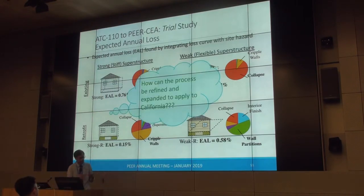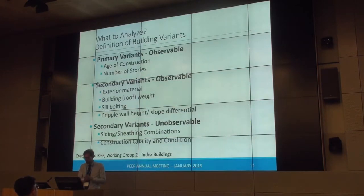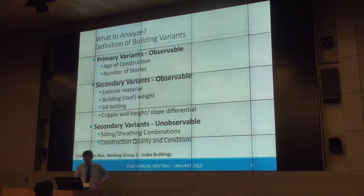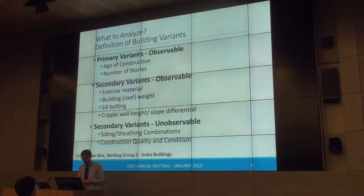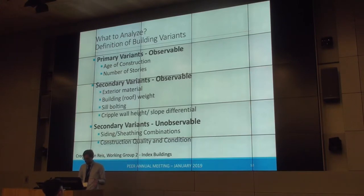The main question now — and for the rest of my talk — is how can we refine and expand this process to apply to California. I'll talk about building variants, which come in different flavors. Much of this work is credited to Evan Reese of working group two. A primary variant broadly classifies the structure by age of construction and number of stories. Secondary variants can be observable, such as exterior siding material and cripple wall height. There are also unobservable secondary variants — things that may not be directly considered but exist in reality — such as the presence of sheathing behind exterior materials and, importantly, construction quality and condition.